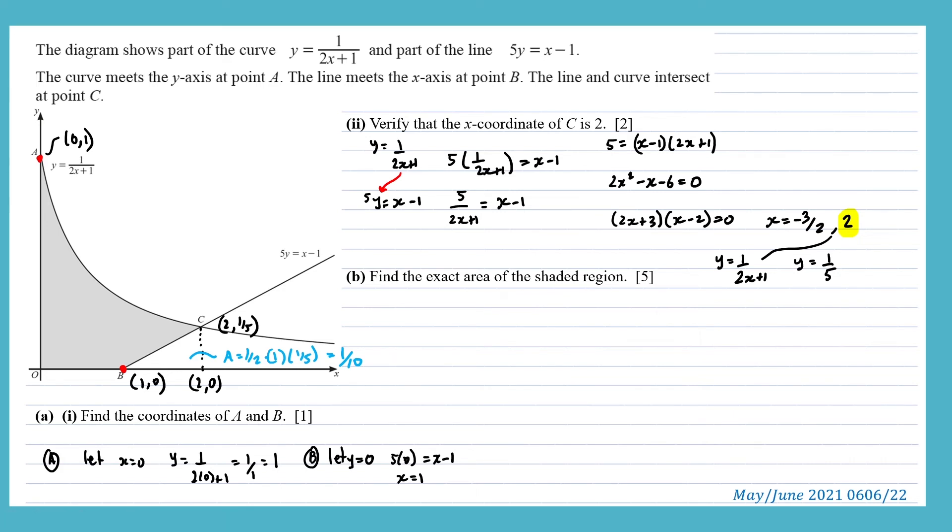So to find our shaded region, we're going to need to integrate between 0 and 2 of our reciprocal function, which is 1 over 2x plus 1 dx. But noting, we're going to need to subtract the area of this triangle, which is 1 tenth.